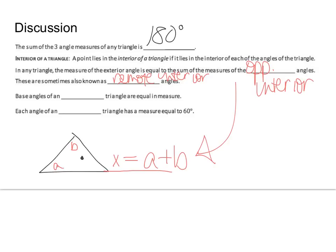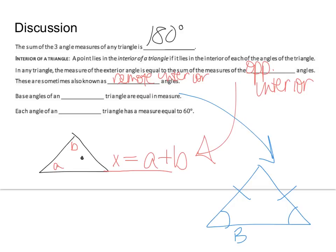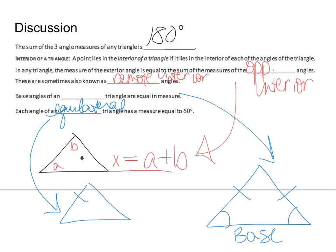Base angles of an isosceles triangle are equal in measure. Isosceles triangles have two equal sides and two equal base angles, because a triangle always sits on its base. Each angle of an equilateral triangle has a measure equal to 60 degrees — all sides are equal, all angles are equal, and 180 divided by 3 gives 60 degrees each.